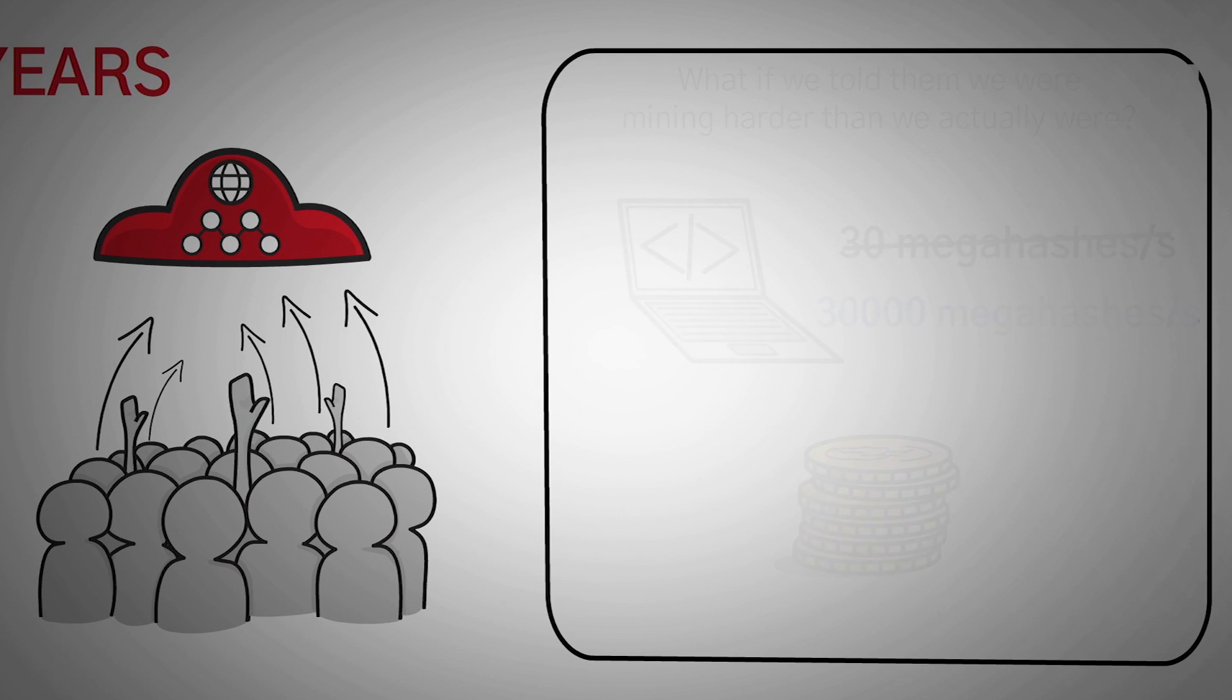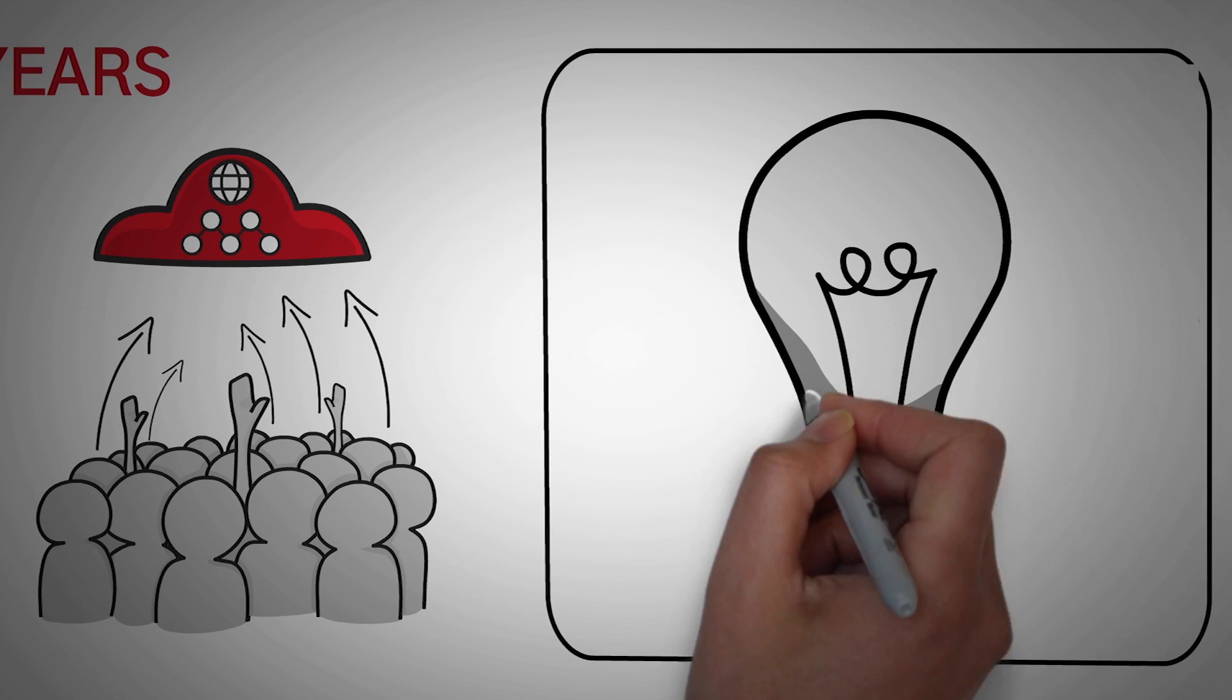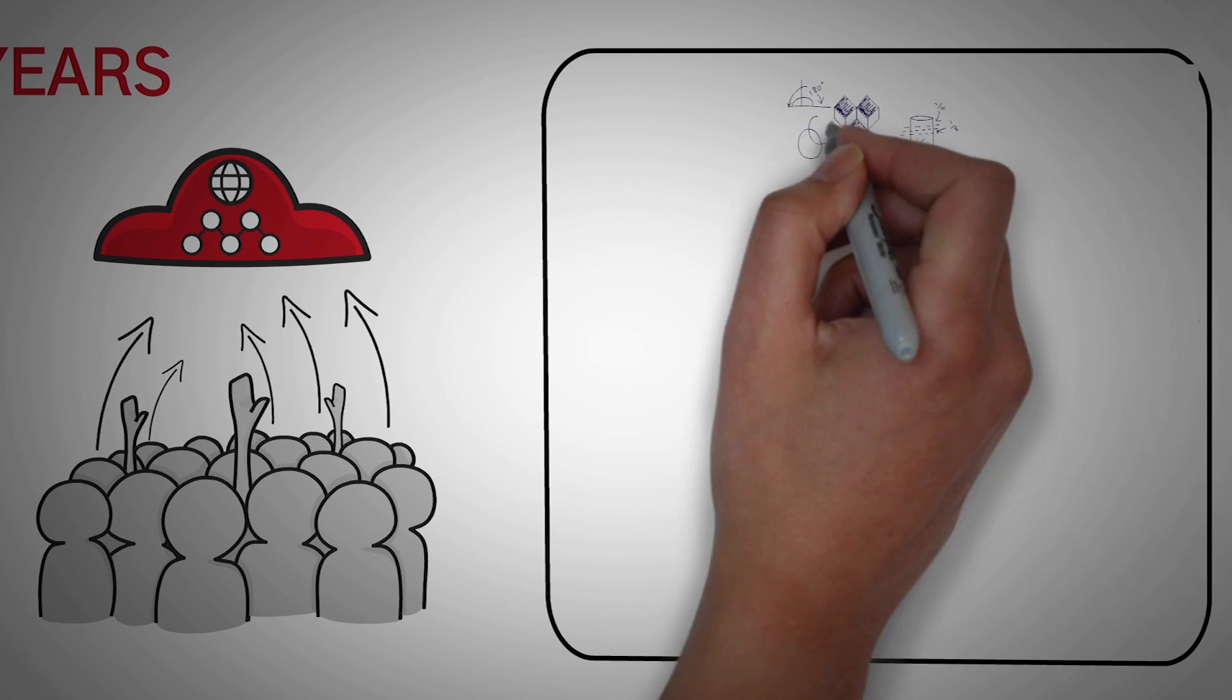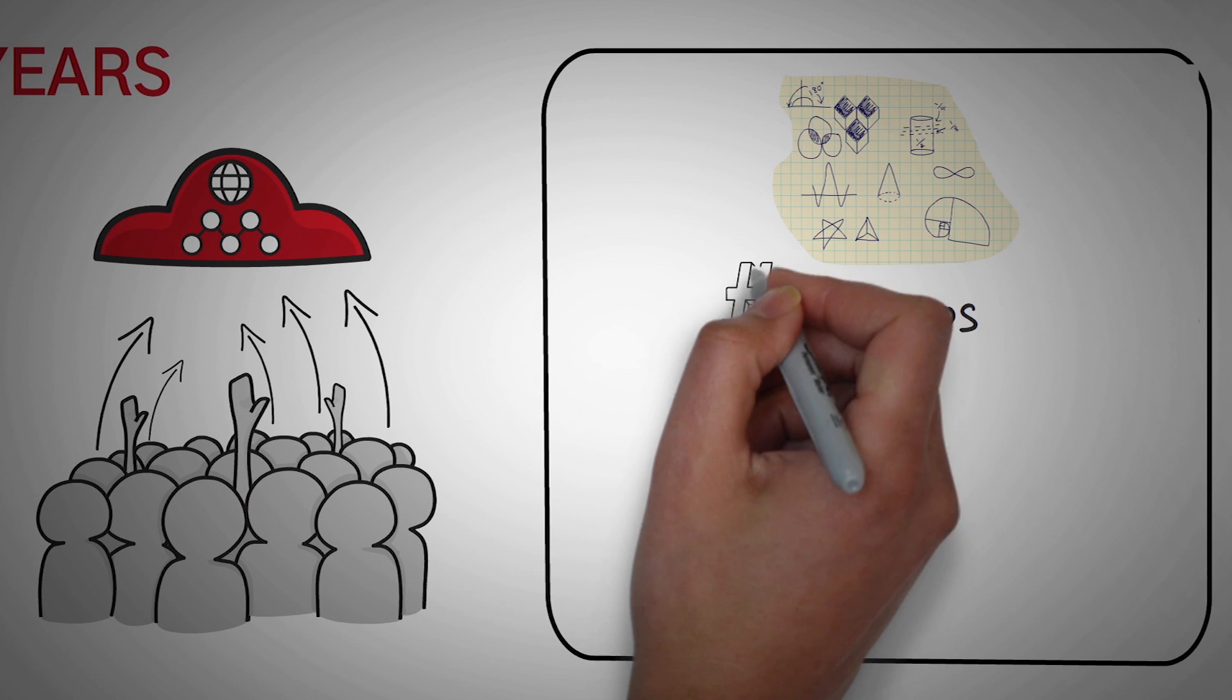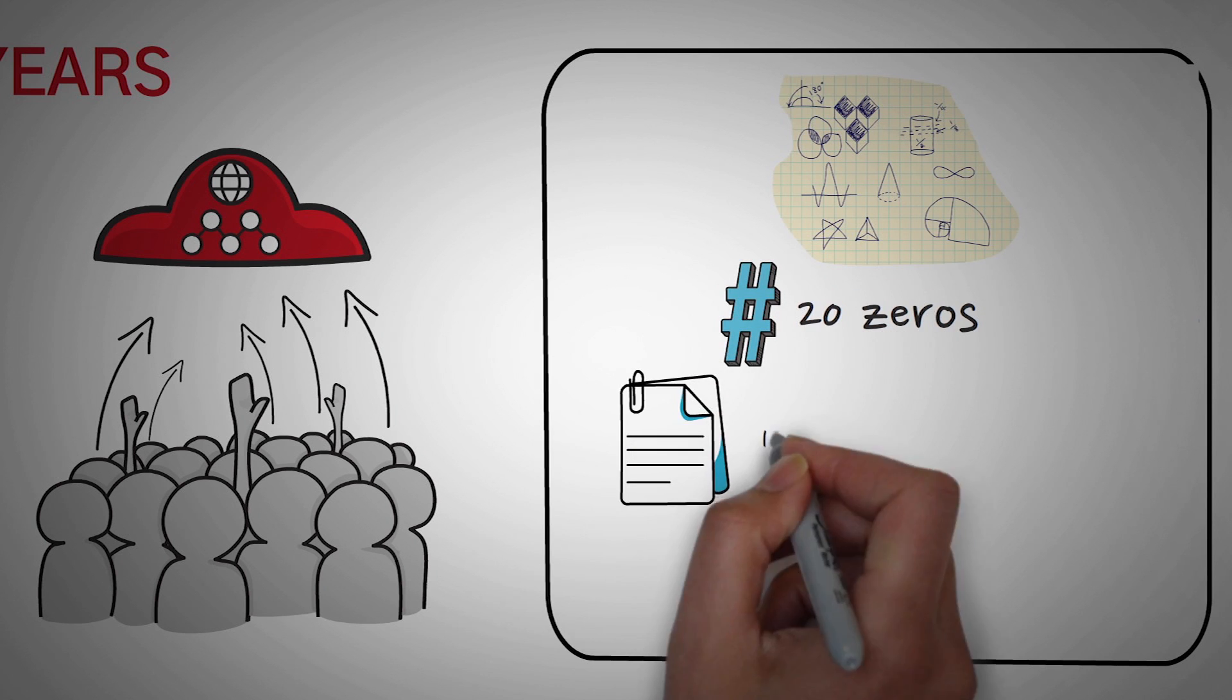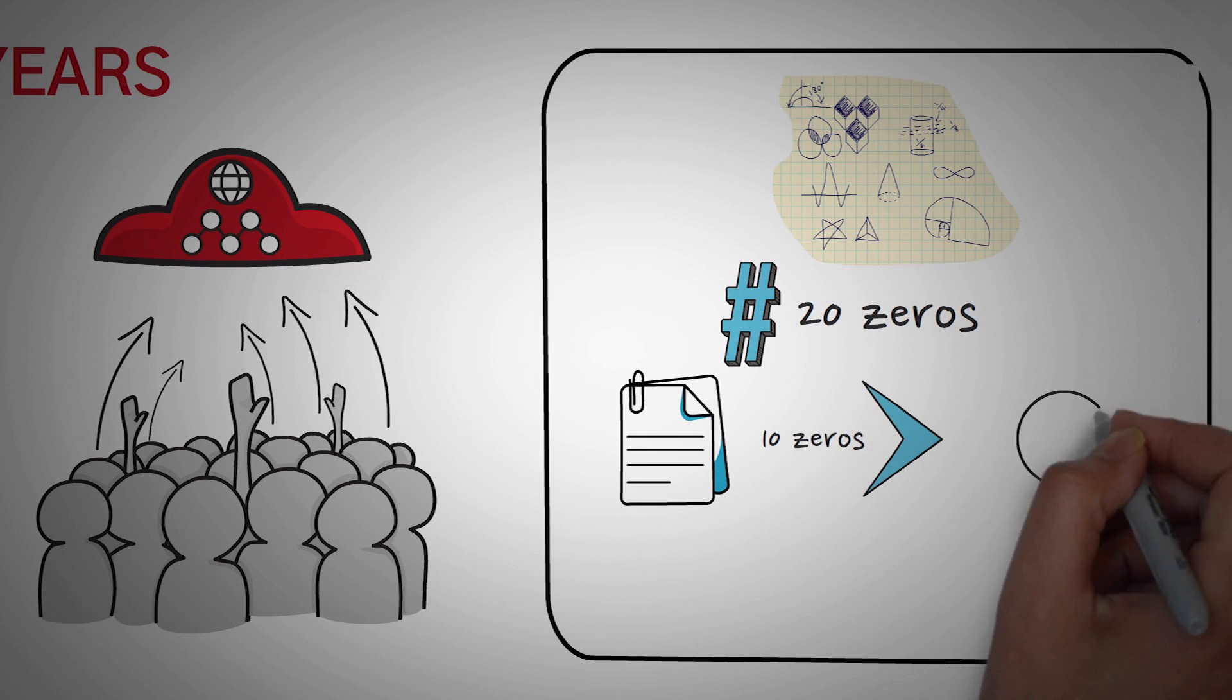So this is how they solved that problem. Instead of the pools taking a miner's word for it, the pools came up with something clever. Let's say that to solve the current block, we need 20 zeros in the hash. So what the pool does is they take any solution that you find with at least 10 zeros and they give you a share.